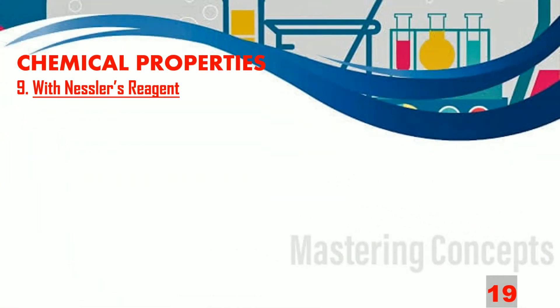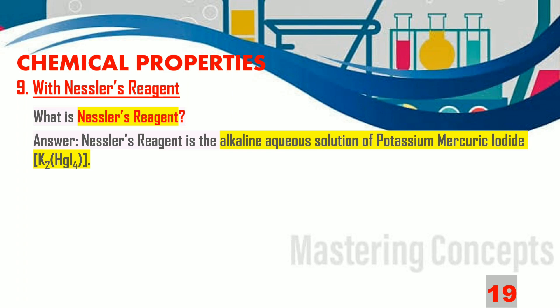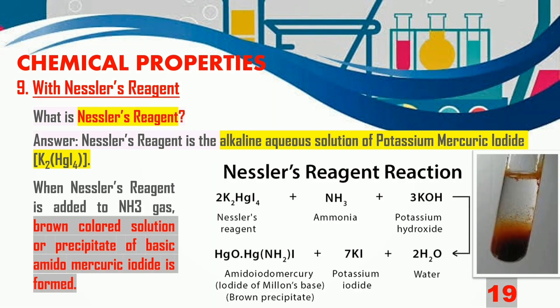Last but not the least, let us find out how the gas reacts with Nessler's reagent. Nessler's reagent is the alkaline aqueous solution of potassium mercuric iodide, with formula K2HgI4. When Nessler's reagent is added to ammonia gas, a brown coloured precipitate of basic amido mercuric iodide is formed.